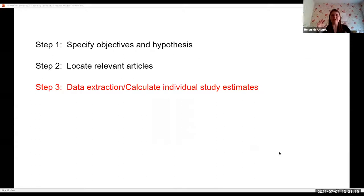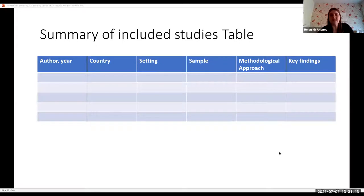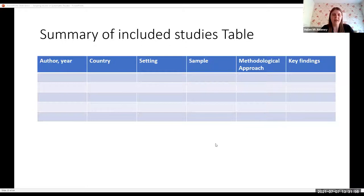So you've located them and now have your relevant studies — now you need to extract the information from them. It may be simply a table, pre-agreed, where everybody extracts the same data: one person extracts, another verifies. This includes the author and year, the country, the setting, the sample size, the method used, and key findings. You're summarising the paper within these tables and bringing out the core work from each paper. If it's a systematic review dealing with an intervention, you typically have a quantitative outcome, and you need to extract those aspects as well.